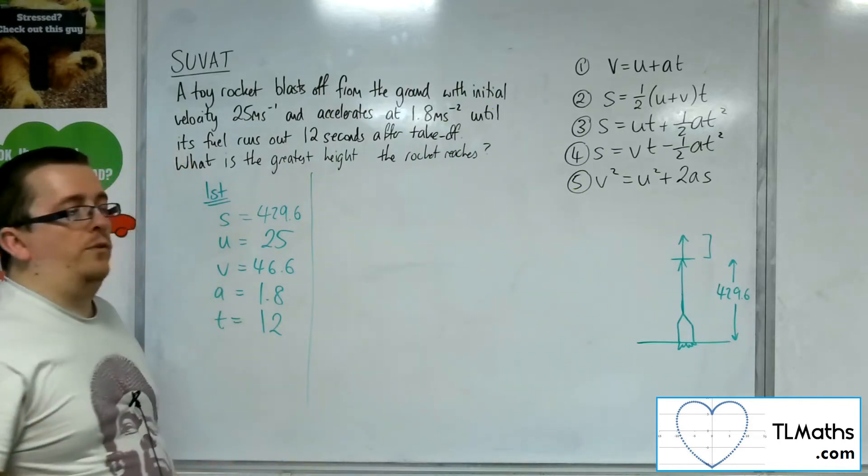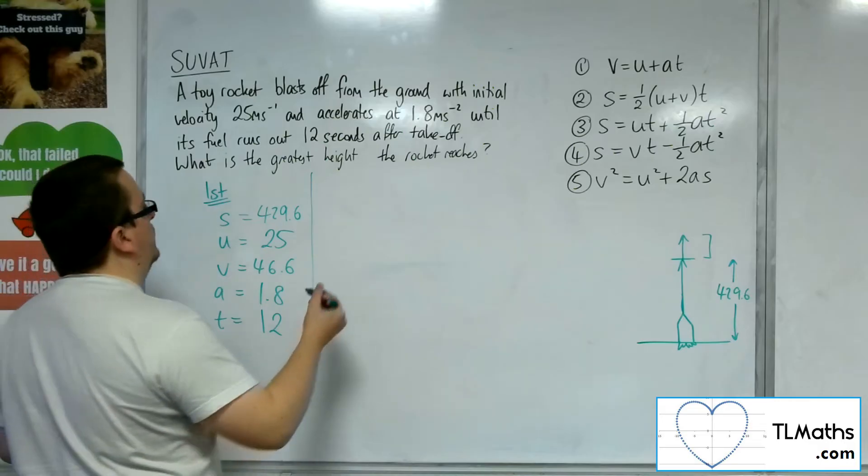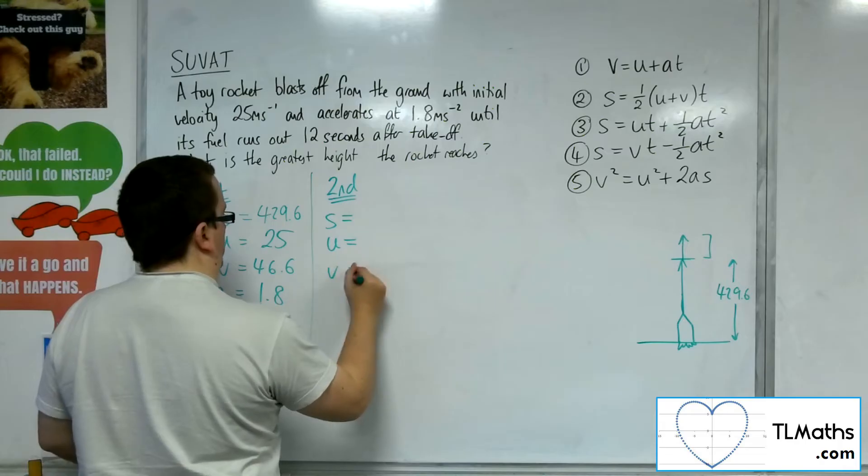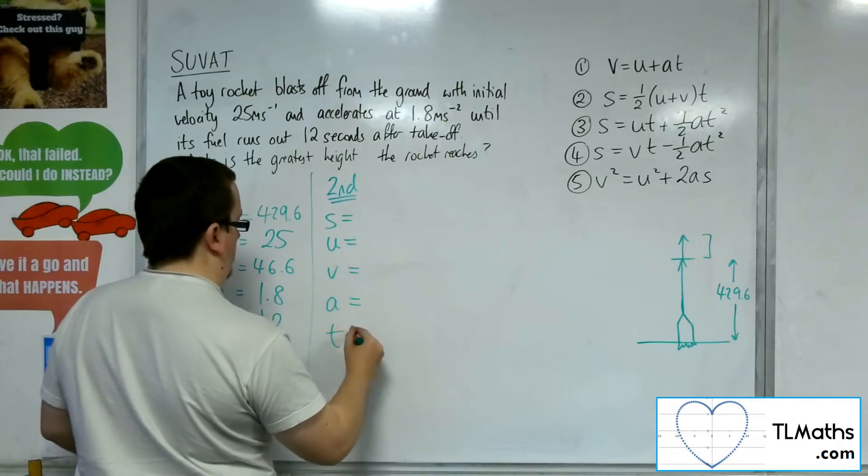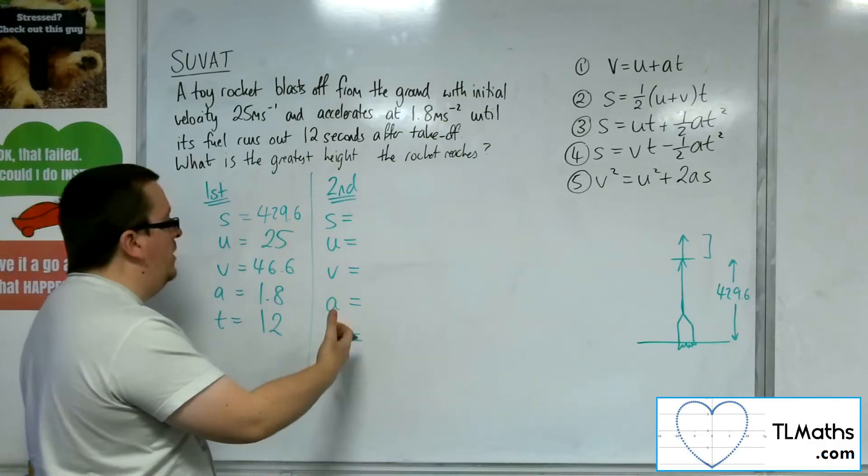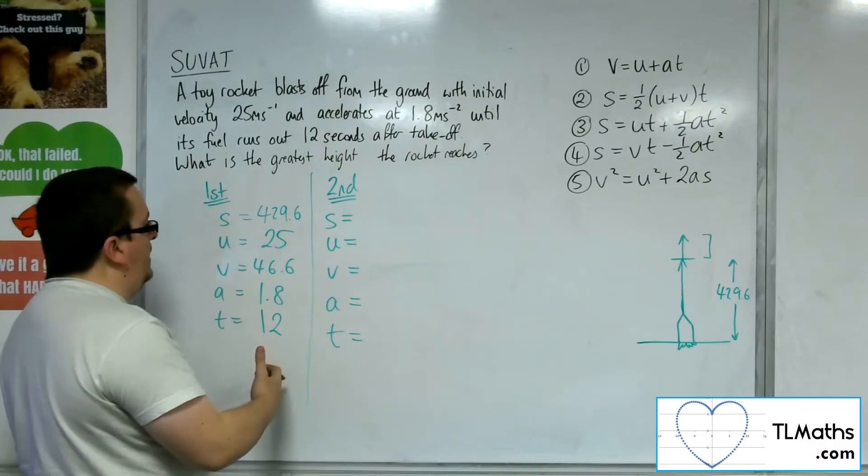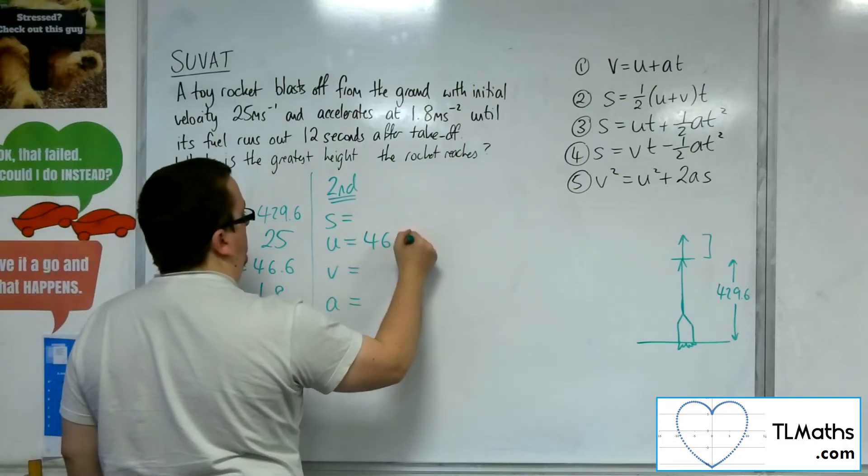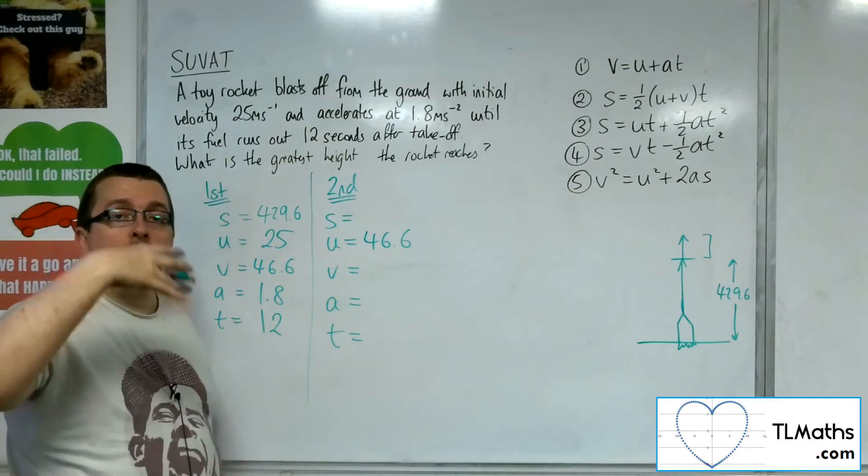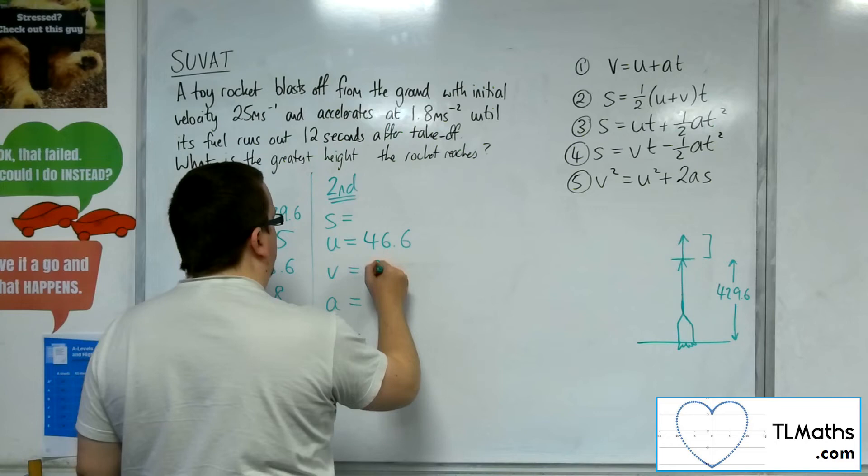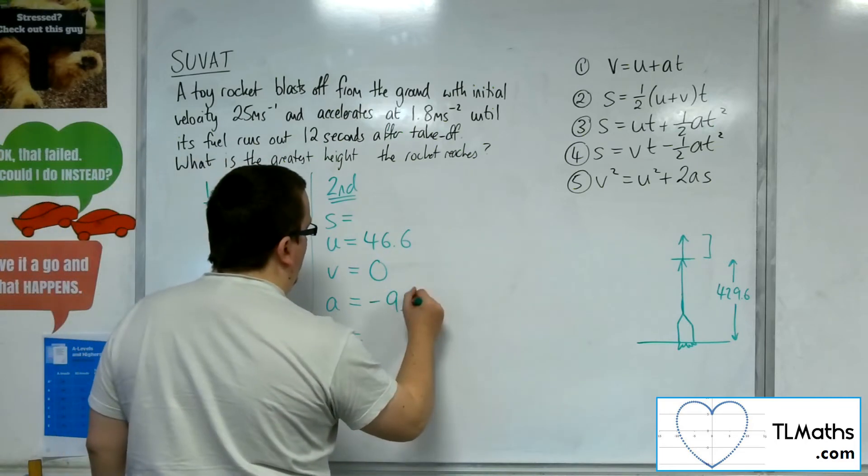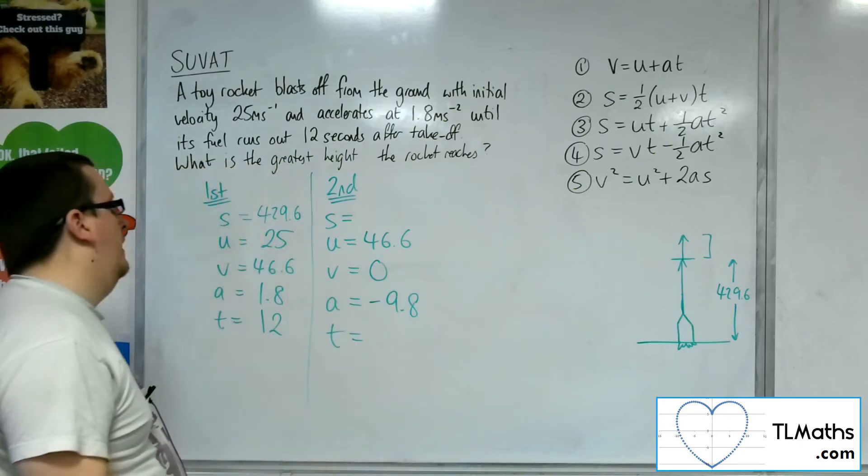Now the fuel has all gone. The initial velocity in the second stage is the final velocity that we had in the first stage. So that's 46.6. The actual final velocity that I want in the second stage is when we reach its maximum height, and so the velocity will be zero. The acceleration now will be down to gravity at minus 9.8.